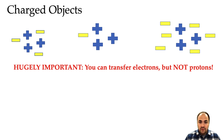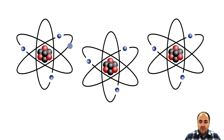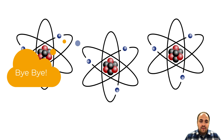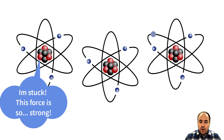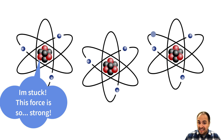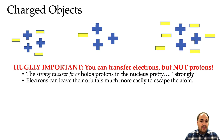This is hugely important when we're talking about static electricity and transferring charge: electrons are the only things that will transfer between atoms — protons will not. The strong nuclear force, one of the four fundamental forces in the universe, holds the nucleus together and holds protons in there pretty tightly, so they're not going anywhere unless there's a nuclear reaction. Electrons can leave their orbitals rather easily, so they are the charge carriers transferring to and from atoms.